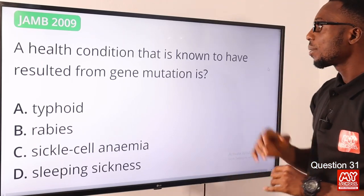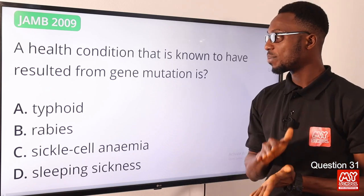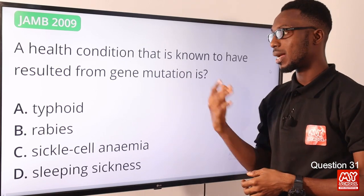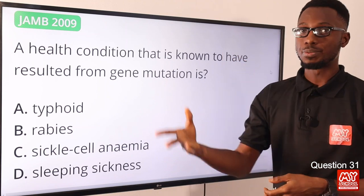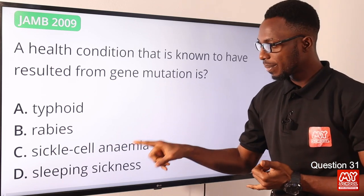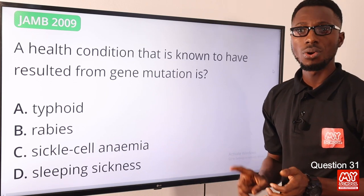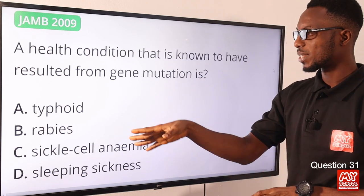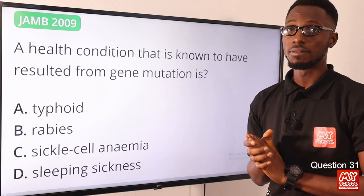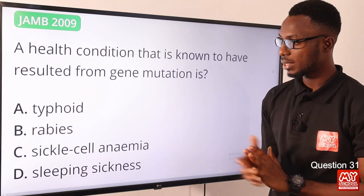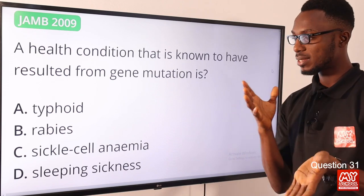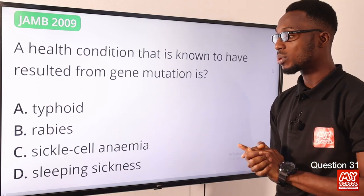Question 31: A health condition known to have resulted from gene mutation. Mutation of the gene involves alteration in DNA structure, which causes a change in its expression. Health conditions resulting from gene mutation include sickle cell anemia, hemophilia, dystrophy, Down syndrome, and color blindness. Typhoid comes from contaminated food and water; rabies is viral from an infected dog bite; sleeping sickness comes from the bite of an infected tsetse fly. The correct option is option C for sickle cell anemia.